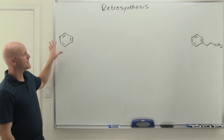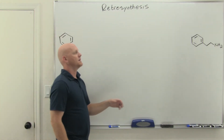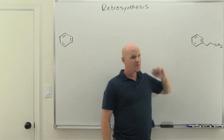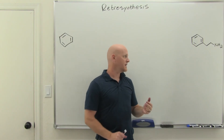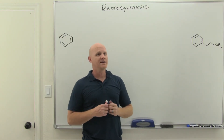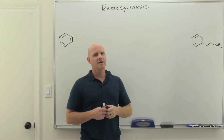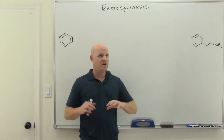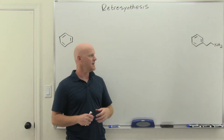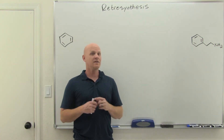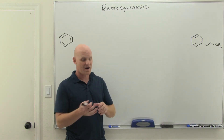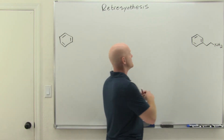In this example, we're starting with plain old benzene and we want to add a couple of additional carbons and once again make an amine. We'll see some similarities to the last one. We only have a couple of different ways of making an amine at this stage — we'll have a whole chapter on amines later — but for now we can use lithium aluminum hydride reduction of either a nitrile or an amide.